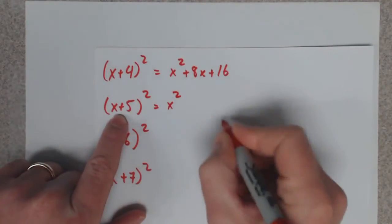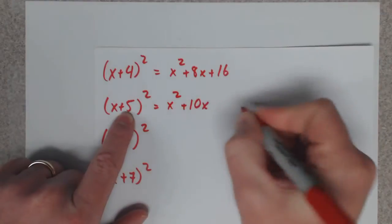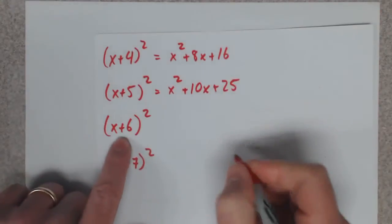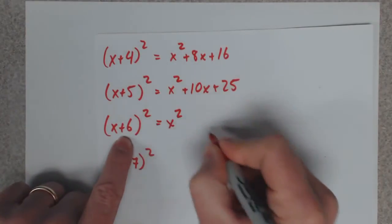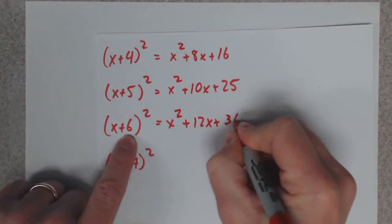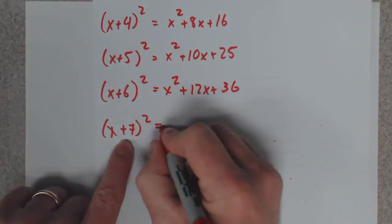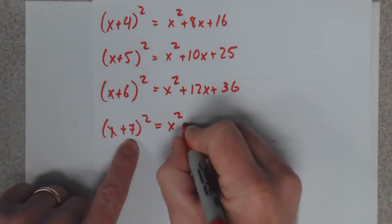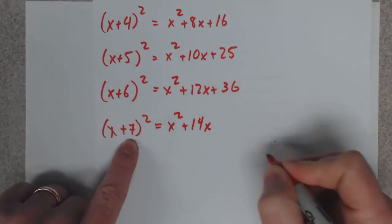It's automatically x squared, you double it, you square it. Automatically x squared, you double it, you square it. Automatically x squared, you double it, you square it.